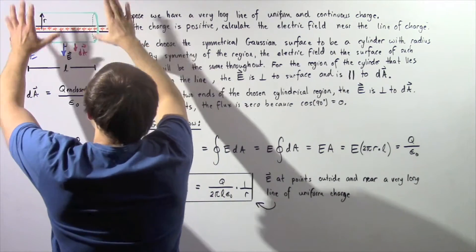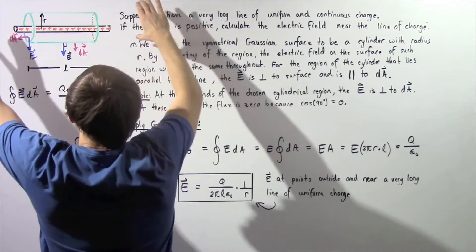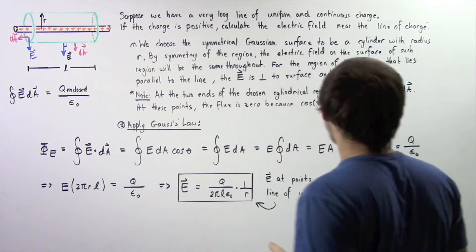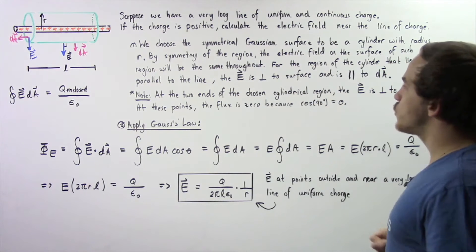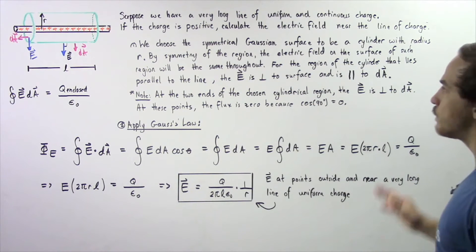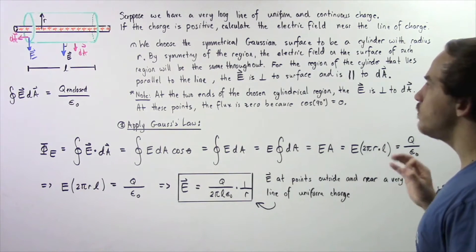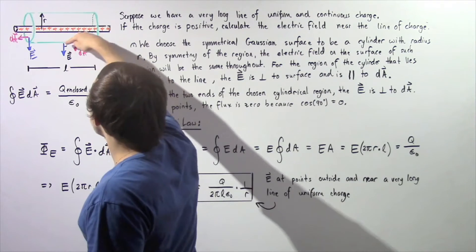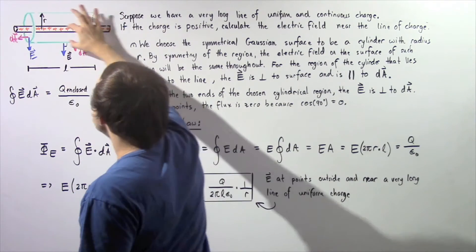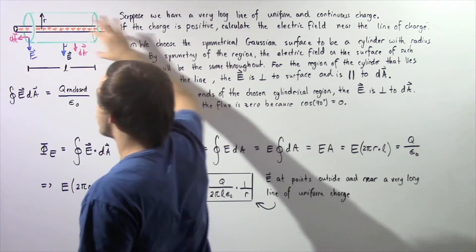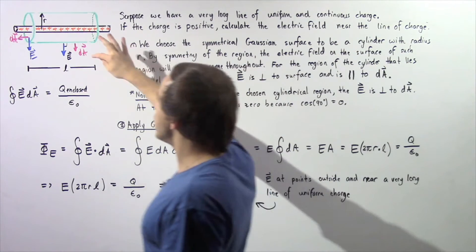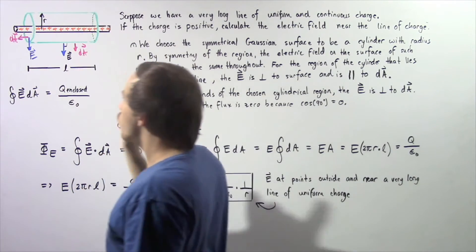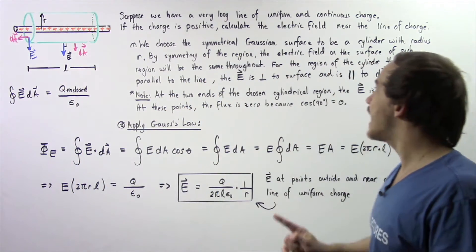This is our green chosen Gaussian surface region, which is a cylinder with a radius r and a length l. By the symmetry of the region, the electric field on the surface of such a region will be the same throughout. Because this charge is uniform throughout, the electric field at any point on the surface of the chosen region will have the same exact magnitude.